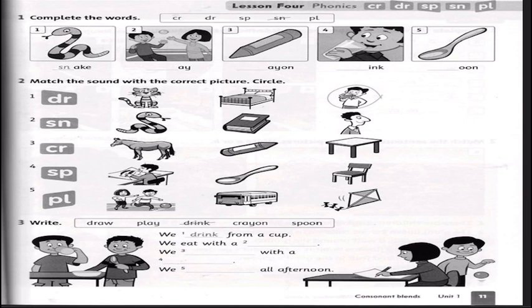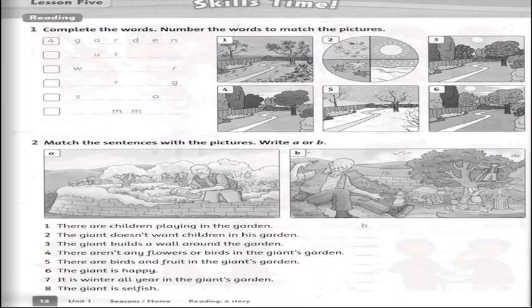Draw will be used for 'drink', snap for 'snake', cr for 'crying', sp for 'spoon', bl for 'play'. Then Exercise 3 — write, using these words in the spaces: draw, play, drink, crying, spoon. We drink from a cup, we eat with a spoon, we draw with a crayon, we play all afternoon.